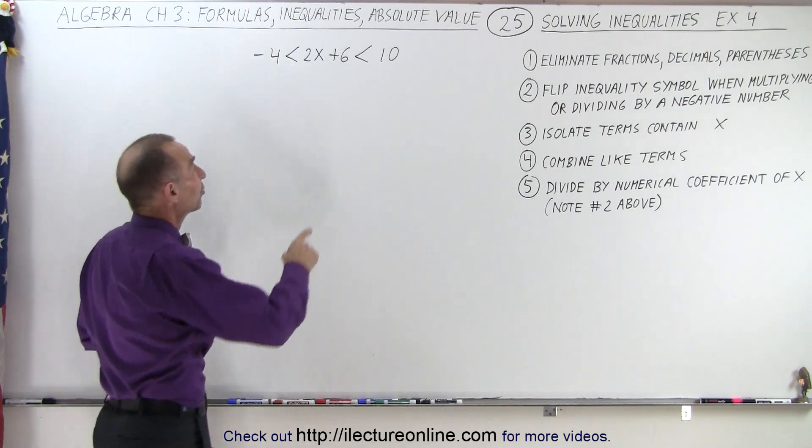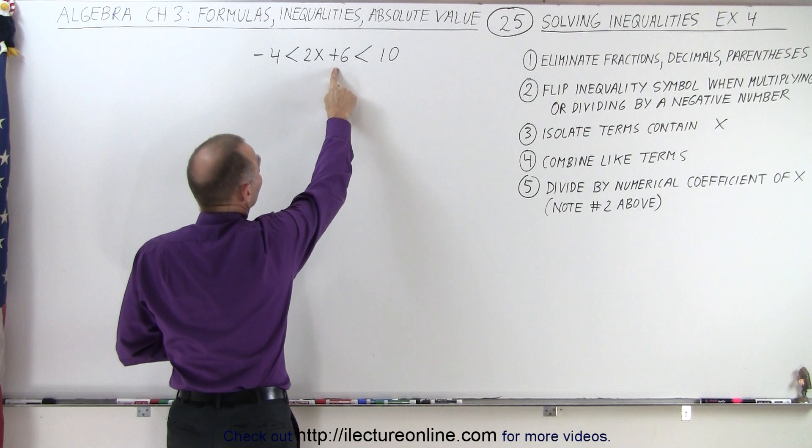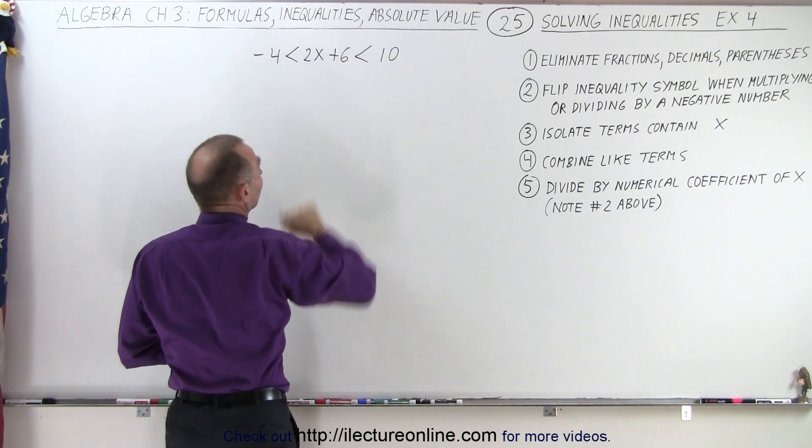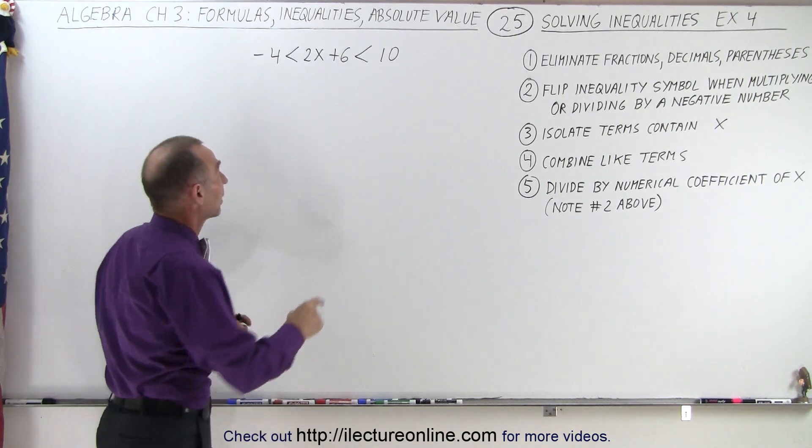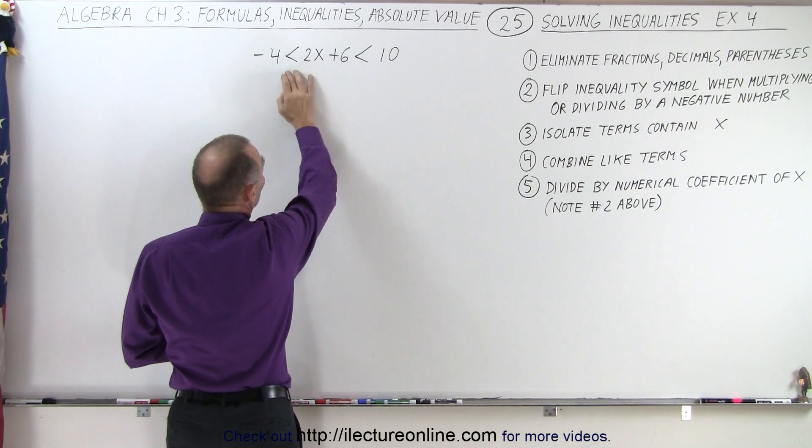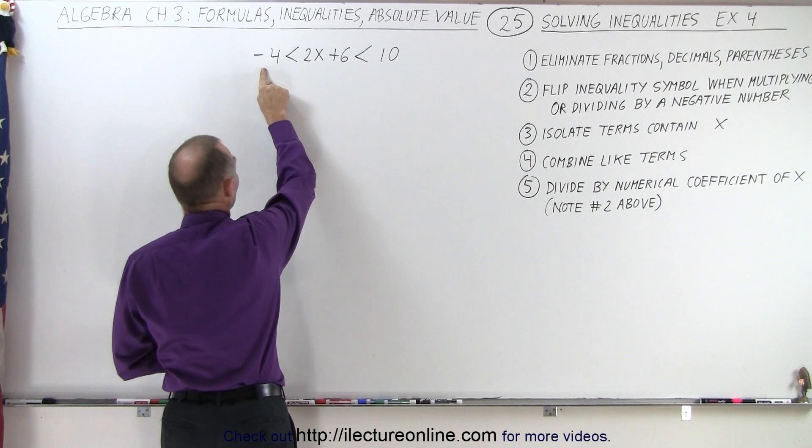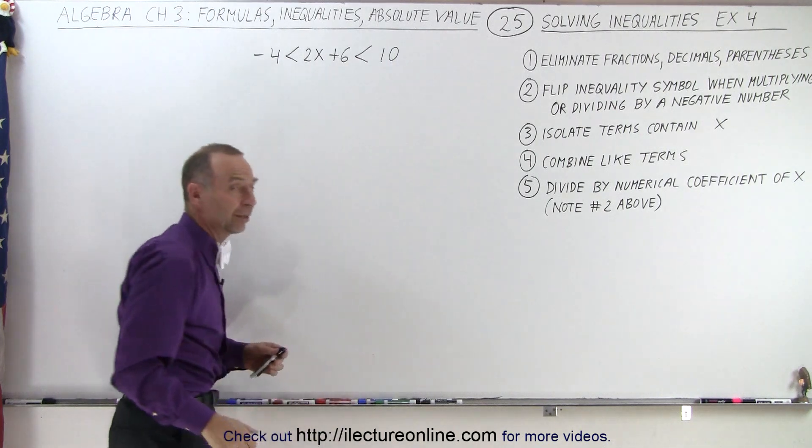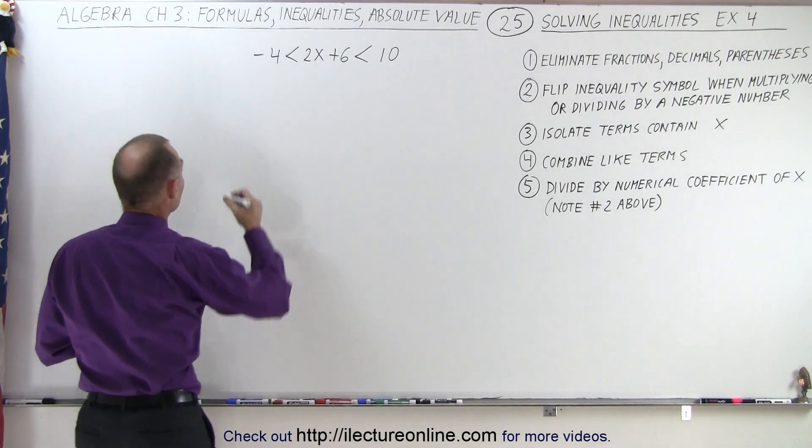So one thing I could do is subtract negative 6 from the plus 6 to make that 6 go away. But if I subtract negative 6 from the quantity that's inside or between the two inequality symbols, I must do the same on the left side and I must do the same on the right side. In other words, it's going to look like this.